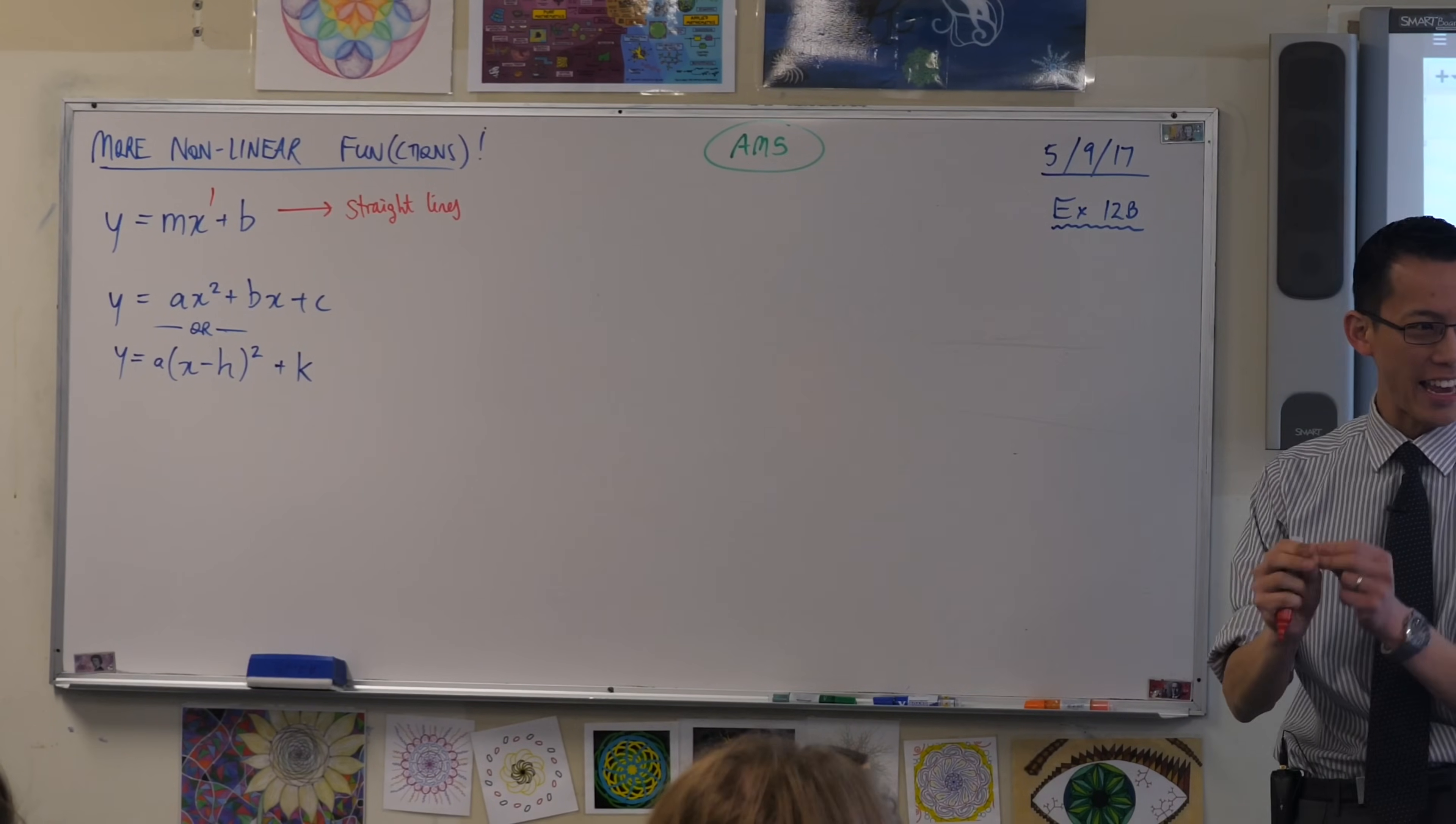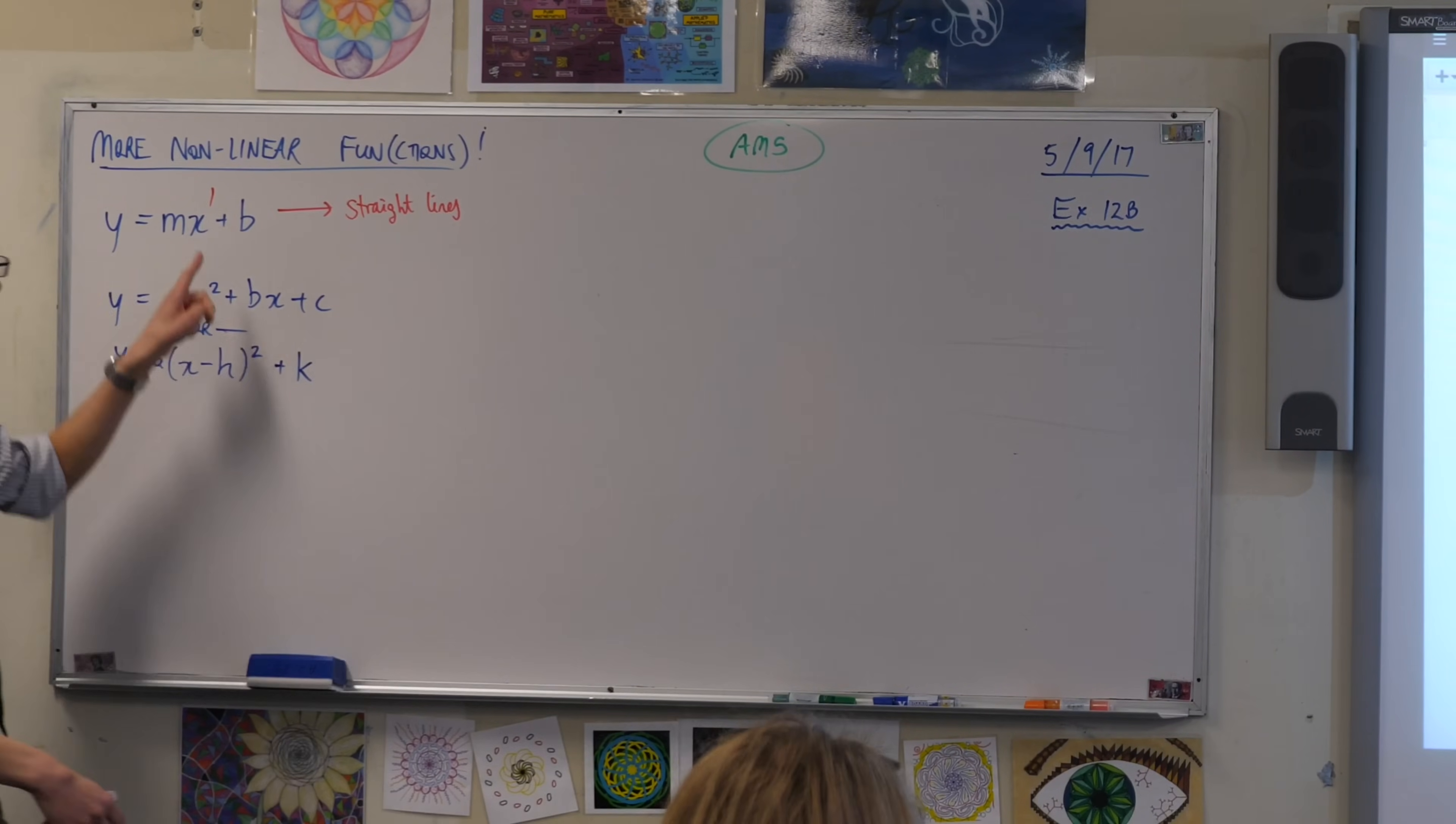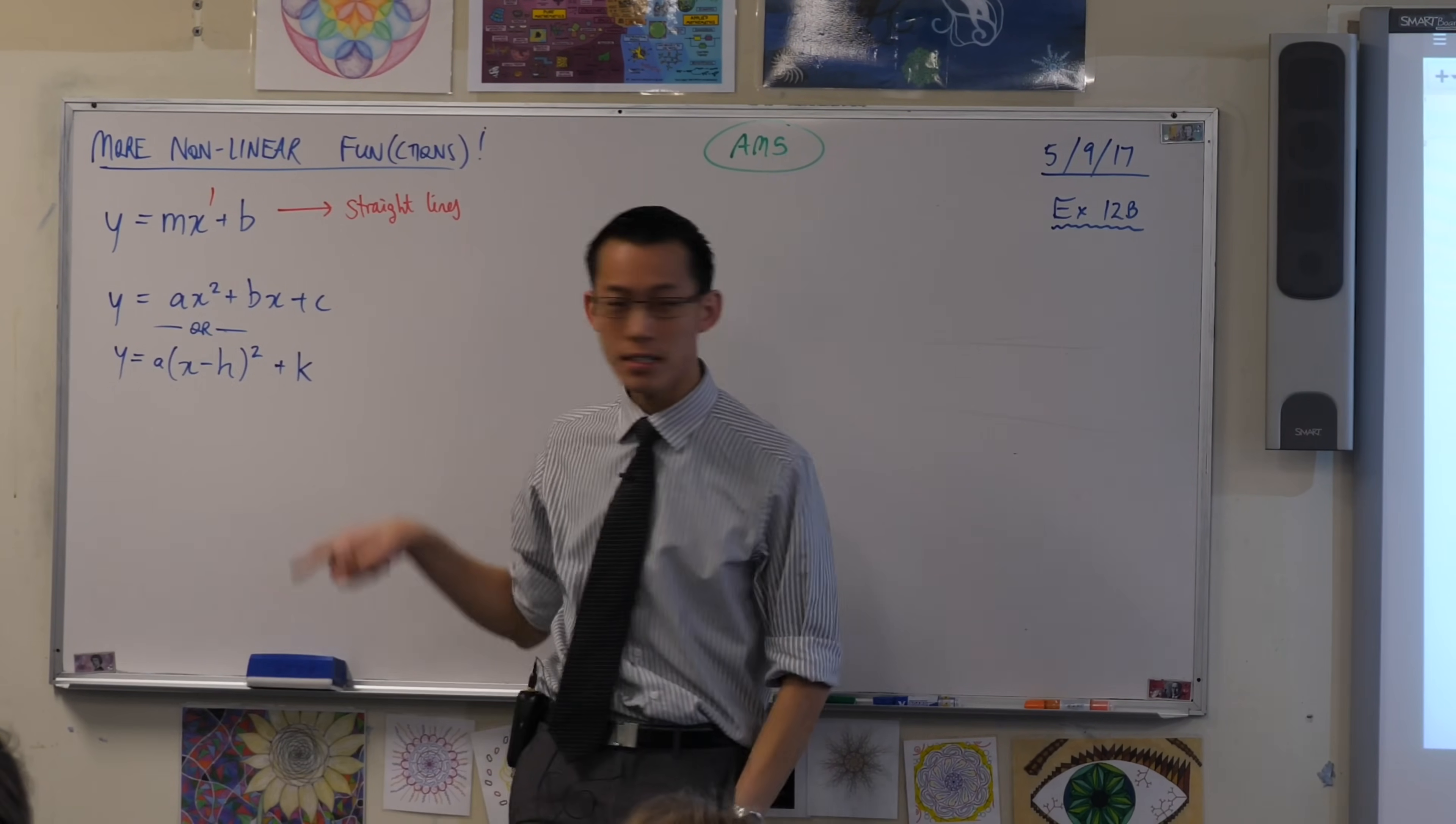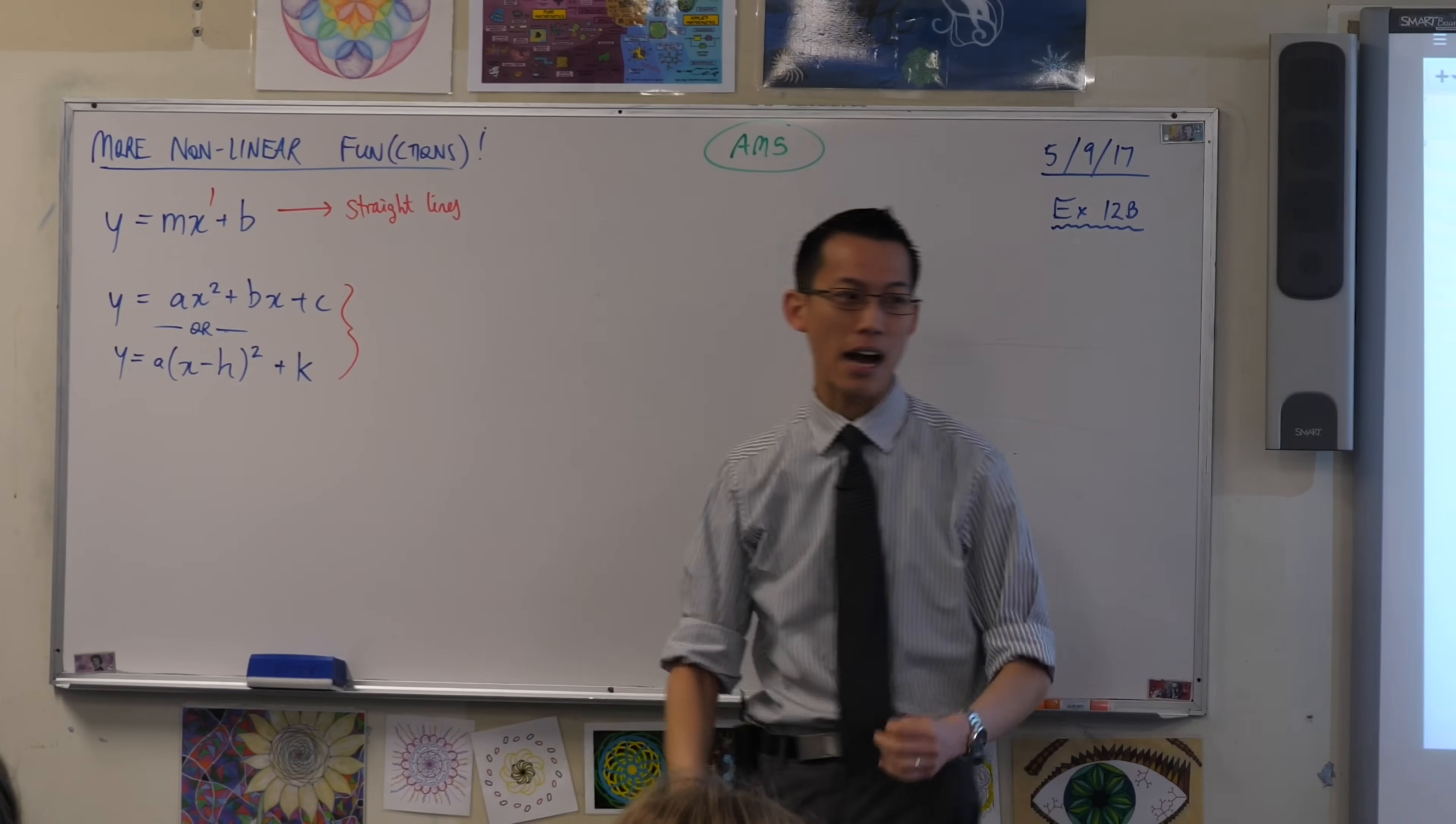And the key indicator is a particular number. Which number is it? It's the fact that things are squared, right? So this is to the power of 1, this is to the power of 2. You can have the squared in a couple of different spots, actually a variety of different spots, but these are the two main ways you'll see it. So these guys here are quadratic functions.